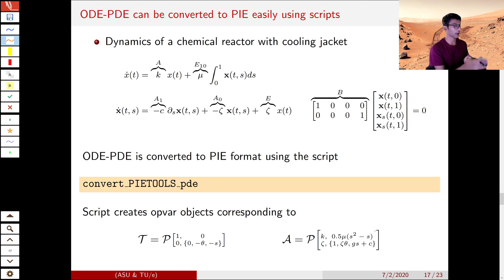So let's look at the example we were discussing. We write it in a general form by defining these parameters, and then we can use the convert scripts in PIETOOLS to convert this PDE to a PIE. So once we define this and call this script, it just returns the relevant PI operators.